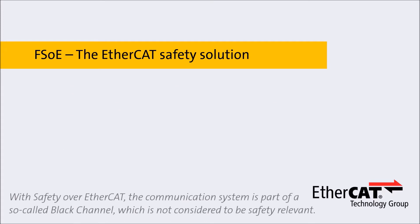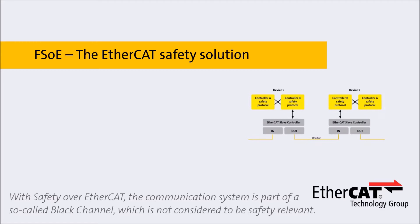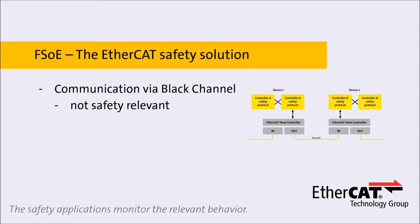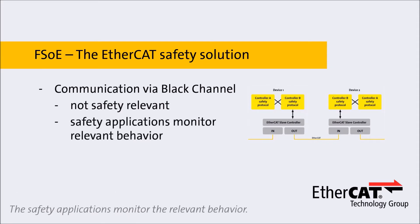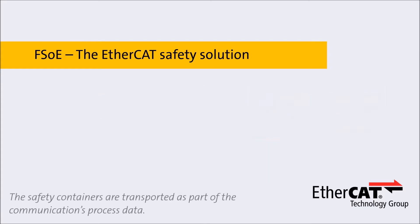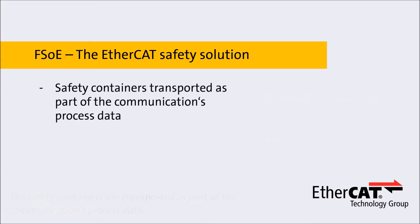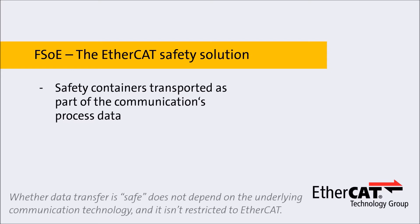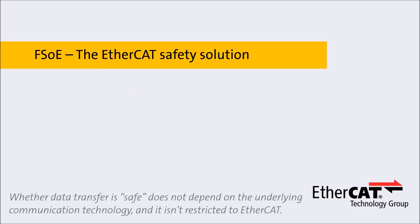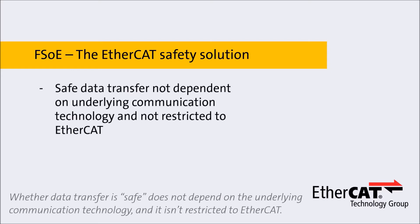With Safety over EtherCAT, the communication system is part of a so-called black channel, which is not considered to be safety relevant. The safety applications monitor the relevant behavior. The safety containers are transported as part of the communications process data. Whether data transfer is safe does not depend on the underlying communication technology.